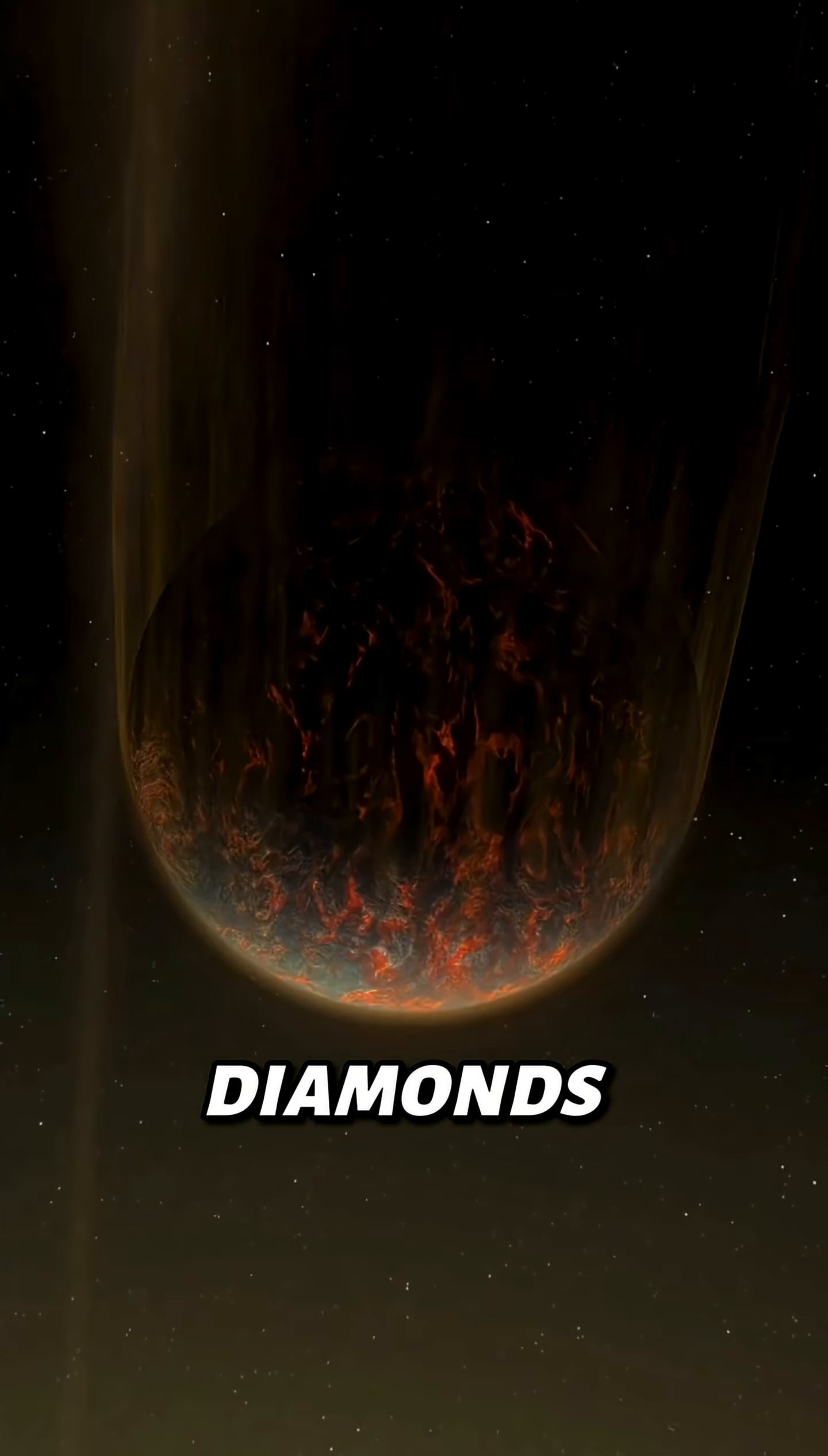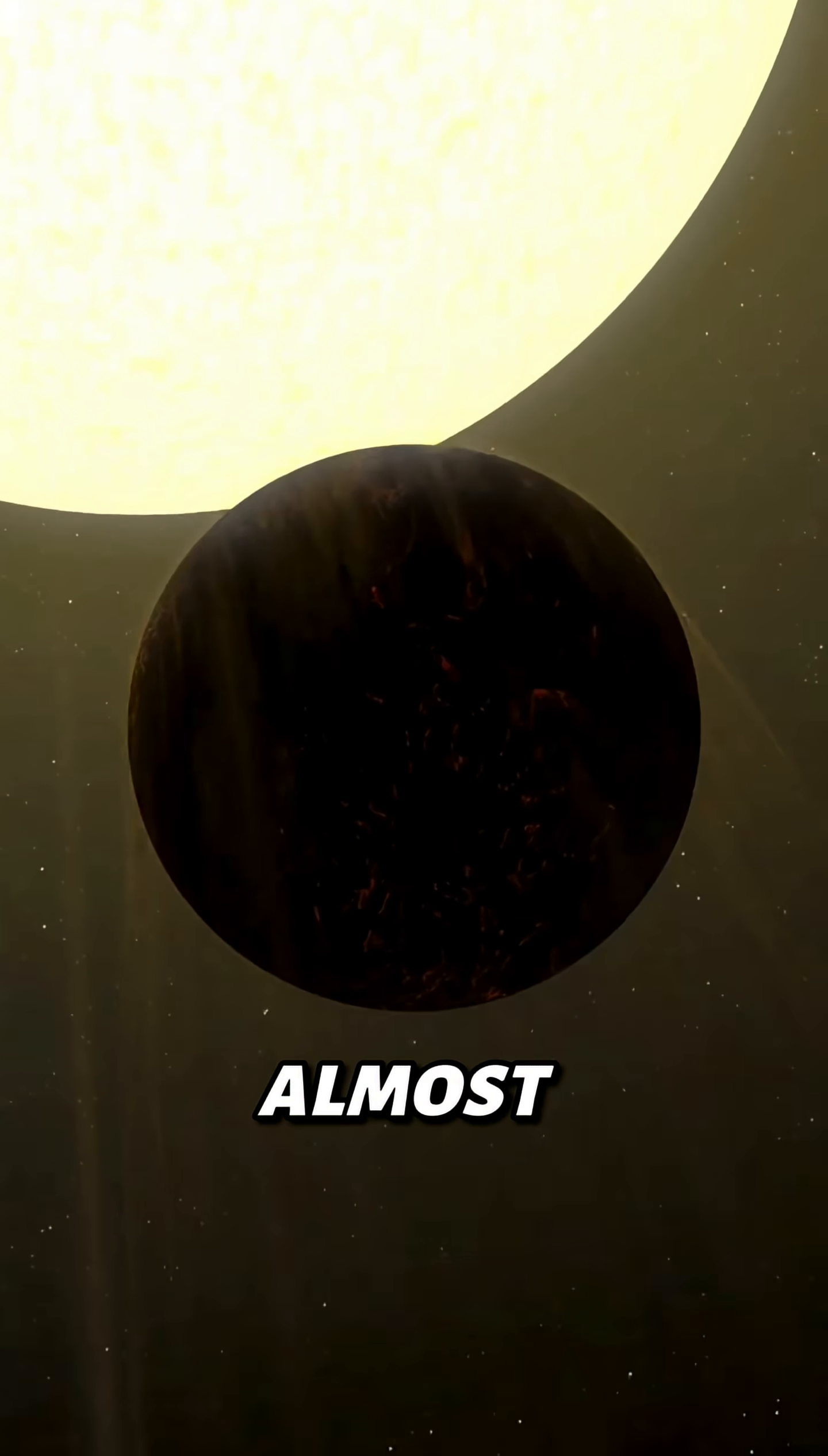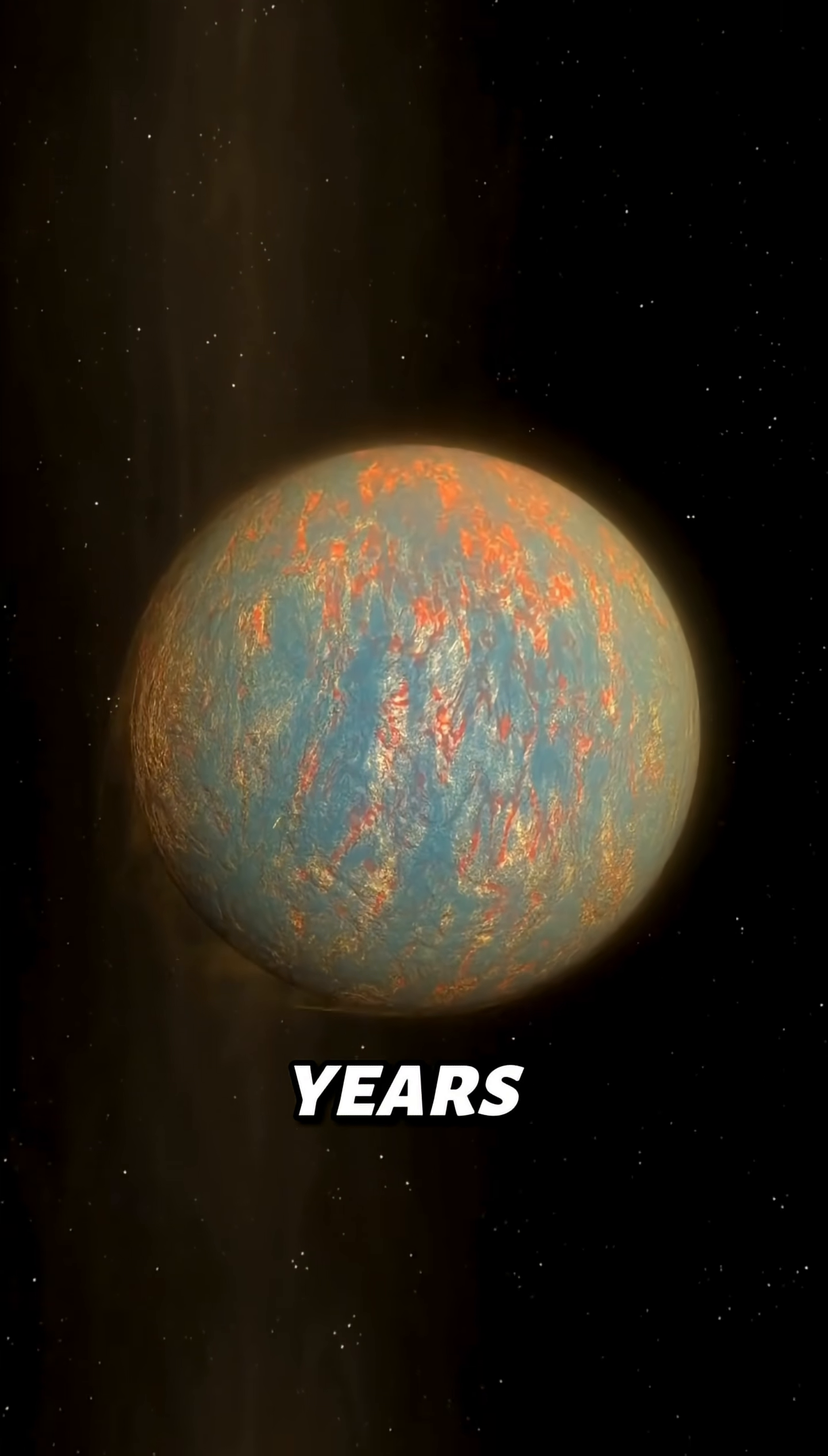Fact two, a planet of diamonds. There's a planet twice the size of Earth made almost entirely of diamonds. 55 Cancri e, shining 40 light years away.